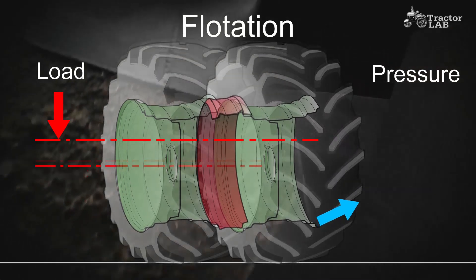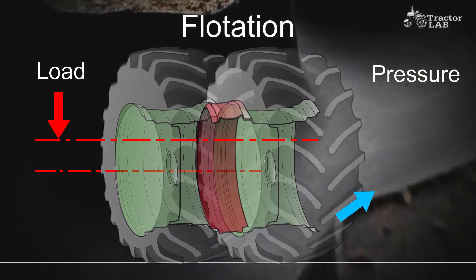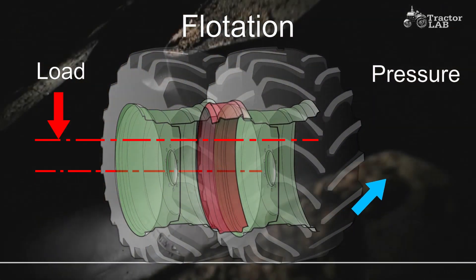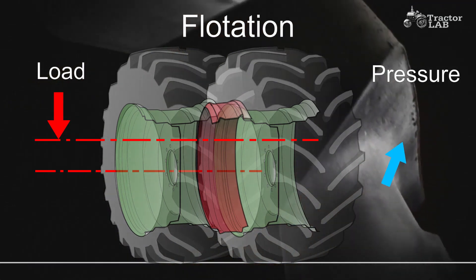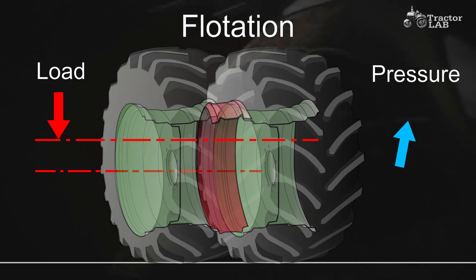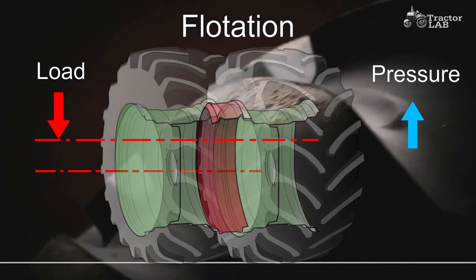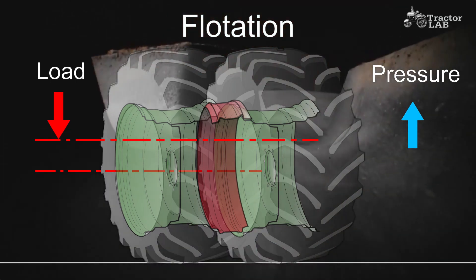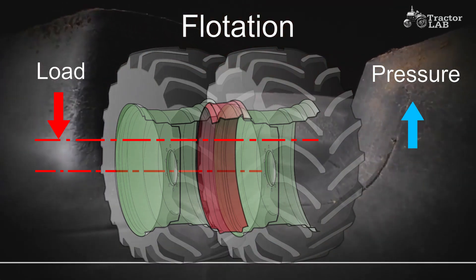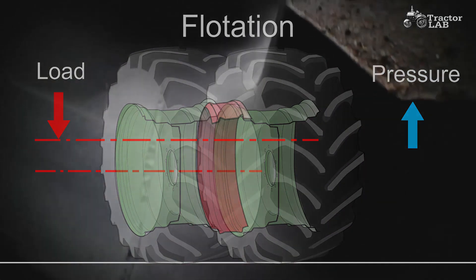Compared to single tires, duals and triples can allow you to both increase traction with more weight and improve flotation with lower inflation pressure if only moderate increases in ballasting are made. However, remember that duals and triples increase your tractor's rolling resistance and decrease traction efficiency.